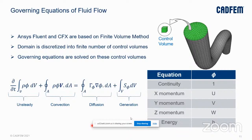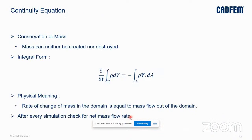Let us look at the governing equations individually. The continuity equation, also known as the equation of conservation of mass — mass can neither be destroyed nor created. Its physical meaning is that the rate of change of mass in the domain must always be equal to the mass leaving the domain, else you have either an accumulation or disappearing of mass, which is not physically possible. So after every simulation, it is good practice to verify the net mass flow rate, ensuring it is as close to zero as possible.